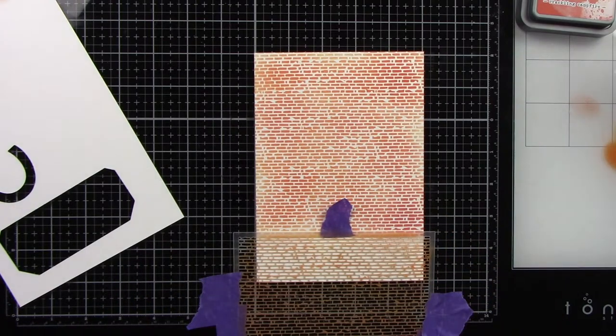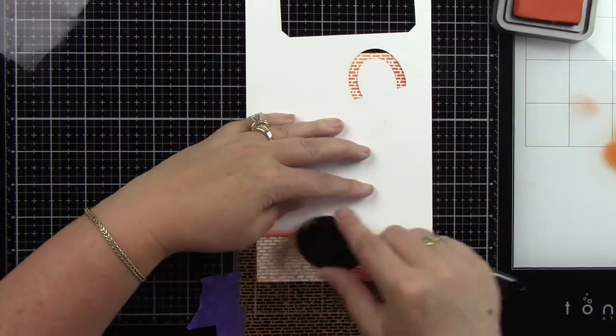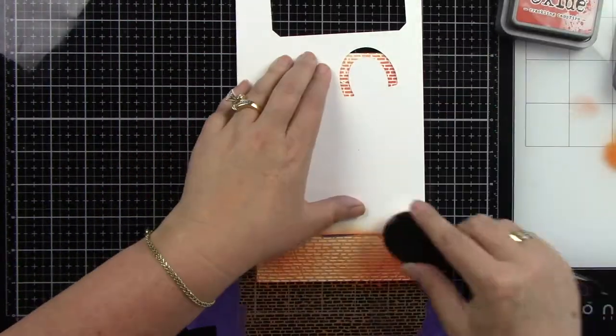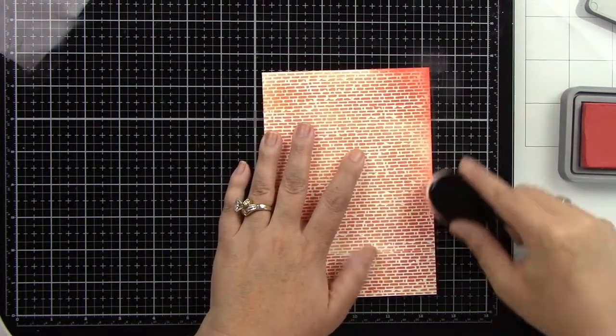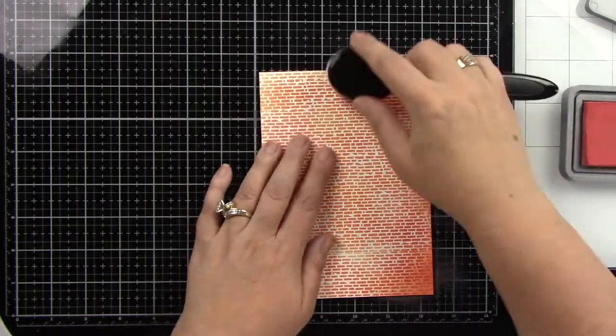I couldn't really figure out how to line it up, so I did it as best as I could and it leaves a little lighter spot. But I actually don't mind because this brick is meant to look a little aged anyways.